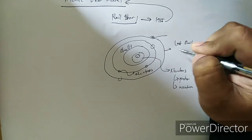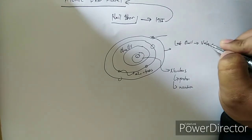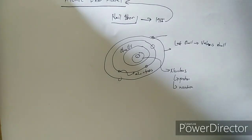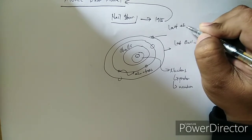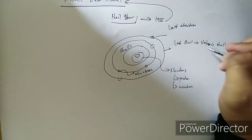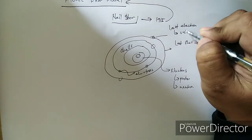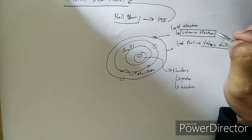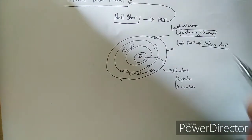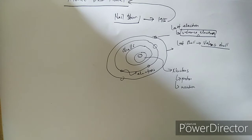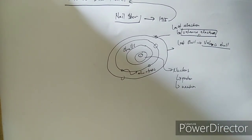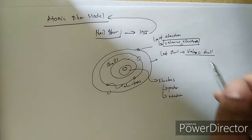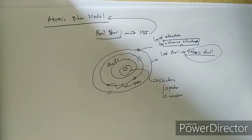The last shell is called the valence shell, and the electron that orbits the valence shell is called the valence electron. In electronics, the valence electron will be our main concern — this is the most important thing in the Atomic Bohr Model, since most electronic devices are based on the valence electron and the valence shell.